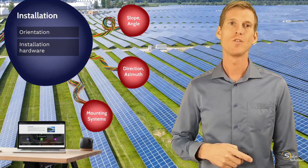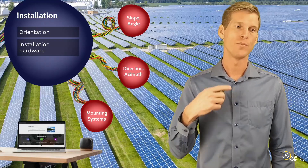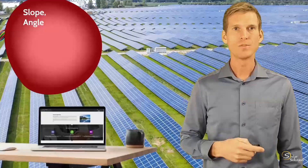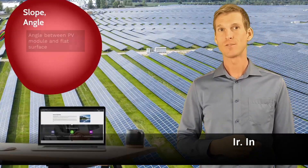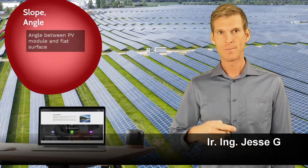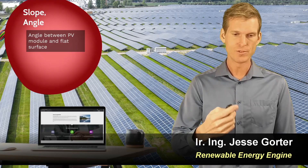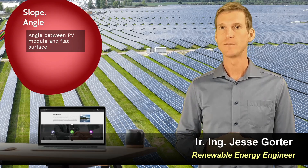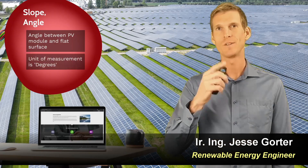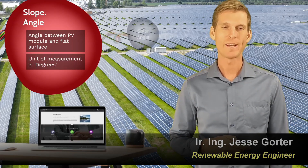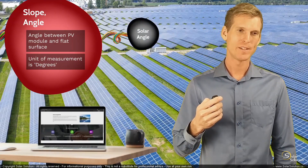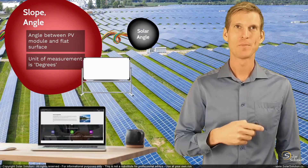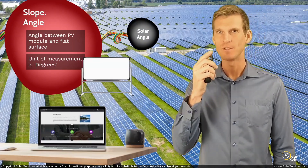Let's start with the chapter on the slope, angle, or tilt of your PV module. We are talking about the angle between the PV module and a flat surface, and the unit we use to describe this angle or slope is degrees. Before we dive into solar angles, let me take you to the whiteboard for a quick refresher on how degrees work.